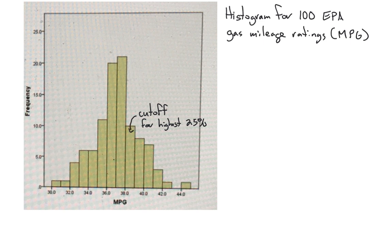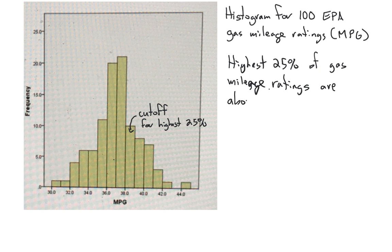So we can say that the highest 25% of gas mileage ratings are above 38 miles per gallon. And similar questions can be answered just like this. You can have lots of information from this chart and from the frequency table as well.